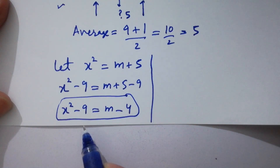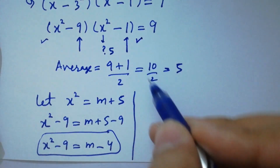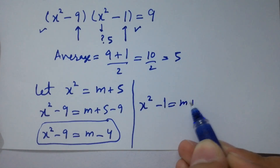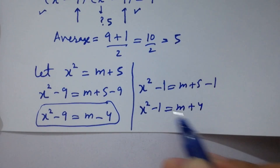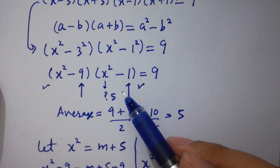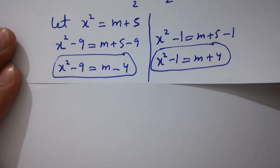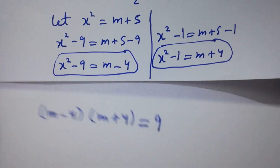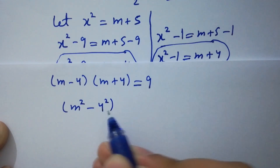For x²-1, subtract 1 on both sides: x²-1 = m+5-1 = m+4. So x²-9 = m-4 and x²-1 = m+4. Therefore (x²-9)(x²-1) = 9 becomes (m-4)(m+4) = 9. This is like (a-b)(a+b) = a²-b², so m²-16 = 9.